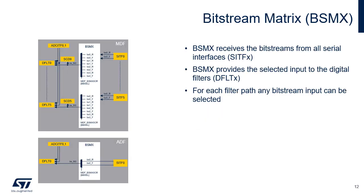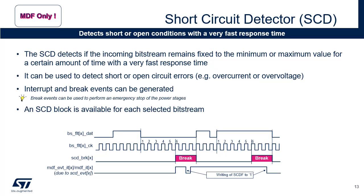BSMX receives the bitstreams from all serial interfaces and provides the selected input to the digital filters. For each filter, any bitstream input can be selected. Each serial interface provides two streams: one with the data sampled on the falling edge and one with the data sampled on the rising edge. The SCD detects if the incoming bitstream remains fixed to the minimum or maximum value for a certain amount of time with a very fast response time. The application can program the time during which the bitstream remains at the same value. If the bitstream remains fixed for longer than the programmed value, then an interrupt and break events can be generated. Break events can be used to perform an emergency stop of the power stages by asserting the break signal. SCD is used to detect short or open circuit errors like overcurrent or overvoltage. An SCD block is available for each selected bitstream.